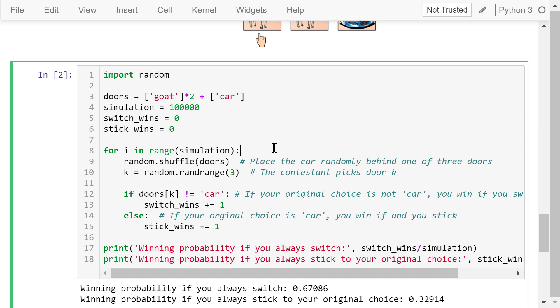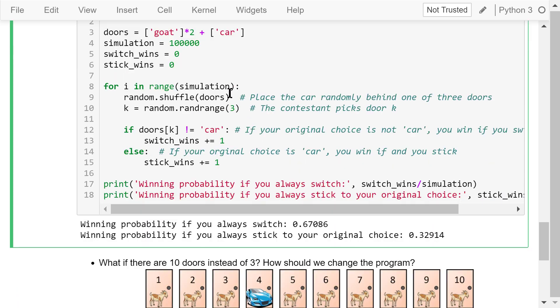We do the simulation using the for loop. For each simulation, the objects behind the door are shuffled so the car is placed randomly behind one of three doors. Next, a contestant randomly picks one of these three doors. Say this door is number k.